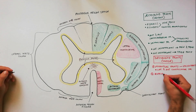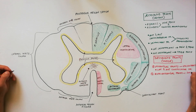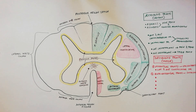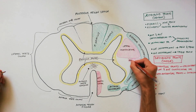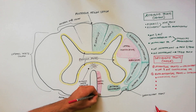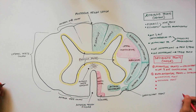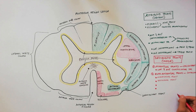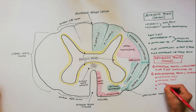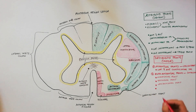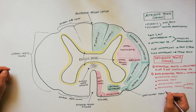Finally, we will indicate the extrapyramidal tracts. These tracts transmit involuntary commands to the spinal cord. There are four major pathways: the rubrospinal tract, located anterior to the lateral corticospinal tract; the tectospinal tract, located anteromedial in the anterior white column; the vestibulospinal tract, located anterior to the anterior spinothalamic tract; and the reticulospinal tracts, including the lateral reticulospinal tract and the medial reticulospinal tract.